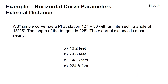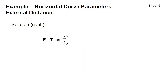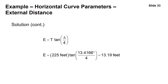To find the external distance — the distance between the PI and the midpoint of the curve — we use E equals T times the tangent of delta divided by 4. With a tangent length of 225 feet and delta of 13.4166 degrees: 225 times the tangent of 13.4166 divided by 4 gives an external distance of 13.19 feet — answer A.